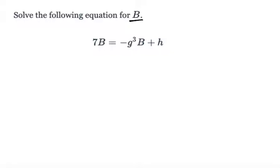The way I can do that is take this negative g cubed b term and move it to the other side by adding plus g cubed b.